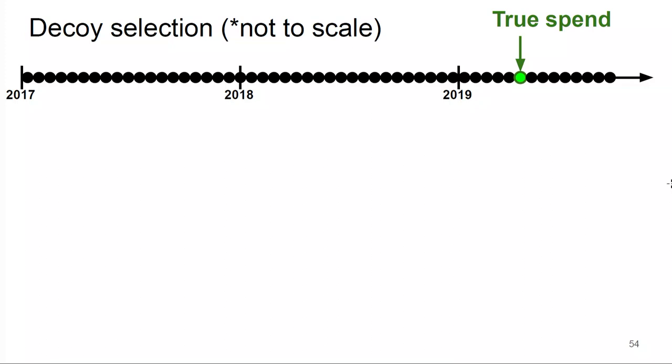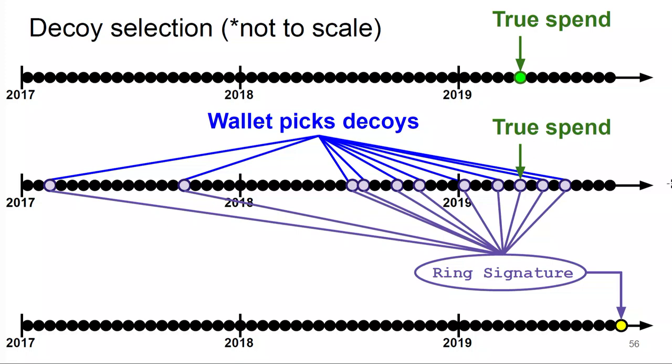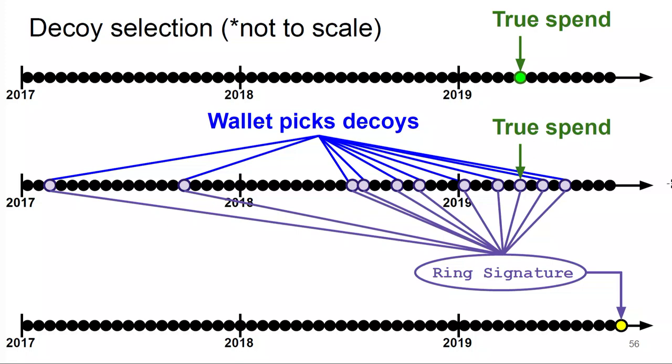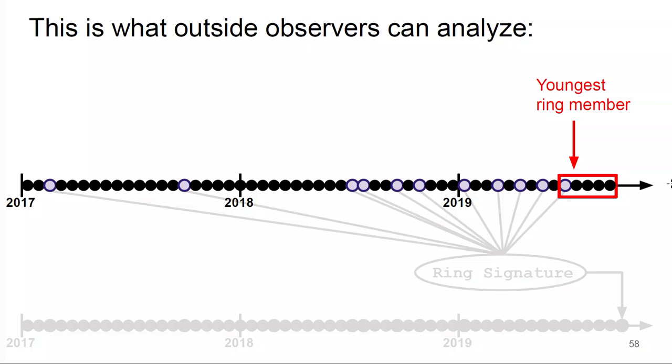Act 2: I'm going to look at juvenile ring members. For this I need a brief introduction to how decoy selection works. Let's say I have a whole bunch of blocks from 2017 through 2019 and I want to spend some funds — the green dot. My wallet goes out and picks a bunch of decoys, which are keys that don't belong to me, but I grab the public key and mix it in when I construct the signature. The true spend and decoys get mixed in the ring signature and deposited as a new output. Observers can only see what went into the ring signature — they ostensibly don't know what the true spend is. One thing you can do from an outside perspective is look at the youngest ring member between when the transaction was mined and the youngest ring member.